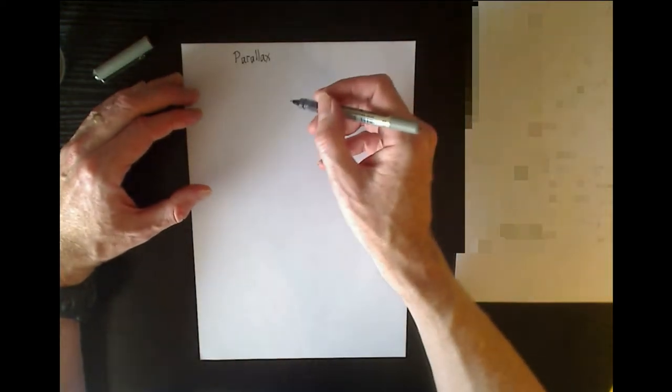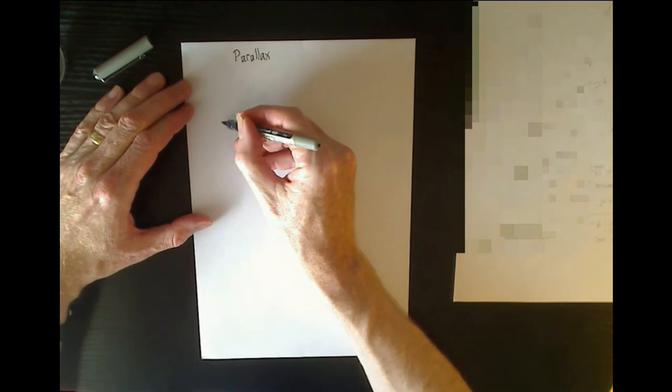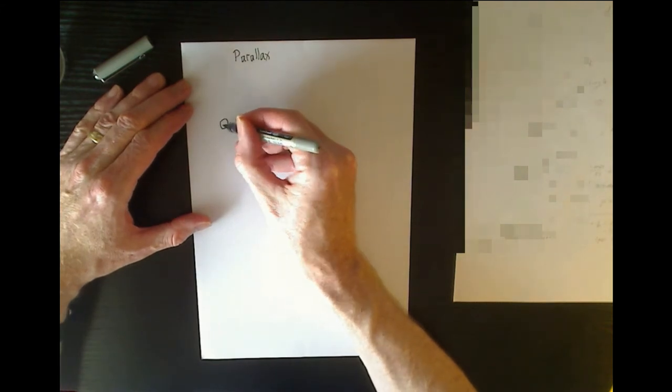Let's have a look at astronomical parallax. The way this works is we consider the Earth in its orbit around the Sun.